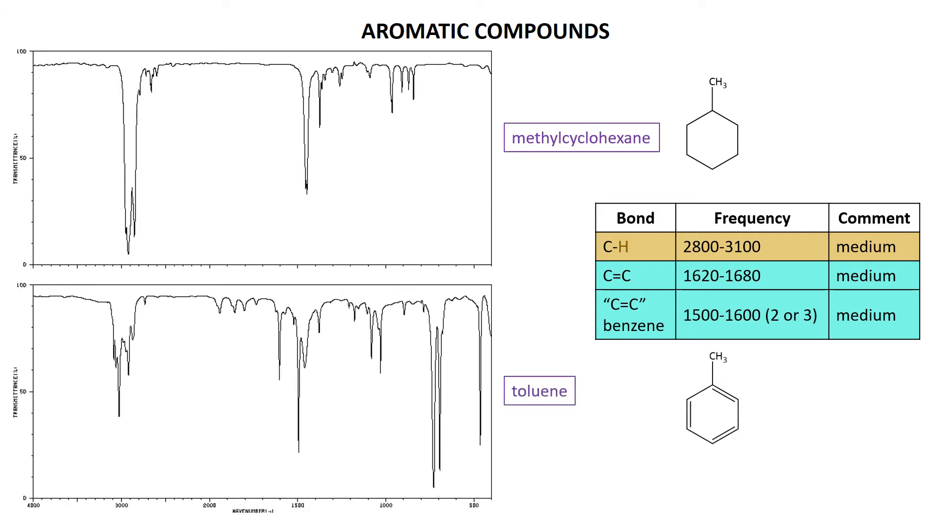Compare that to toluene. And again, as we look at the important features here, ignoring the fingerprint region because that's particularly nasty, although it does have some good stuff in it for aromatics that you'll study when you get to university. Both of them have got the carbon-hydrogen stretches, both of them have got the carbon-hydrogen bends, but what I want you to note is that toluene has this stretch here that is right down there, just about 1600, just as we would expect from the carbon-carbon double bond for benzene.